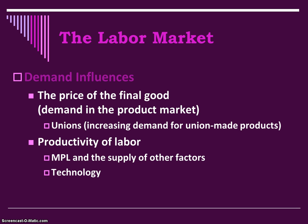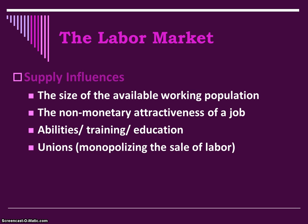The productivity of labor is also going to influence the demand for labor — the marginal product, the supply of other factors, and technology are going to cause the VMPL to shift. The supply of labor is going to be affected by many things, such as the size of the available working population, the non-monetary attractiveness of a job — things that attract someone to a profession other than money. For example, teachers may choose their profession partly for holidays off. Abilities, training, and education required also matter. Unions also monopolize the sale of labor for various industries, affecting the supply curve as well.